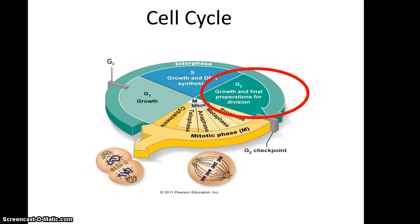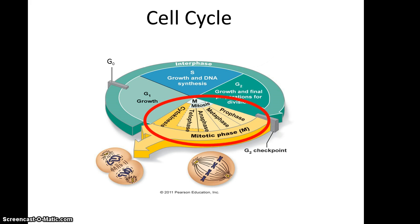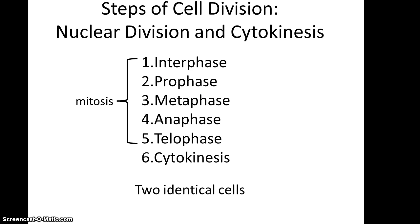At the end of G2 there's a checkpoint to make sure the cell is ready to divide. Then you enter the mitotic phase, which is when DNA is separated and you get two new cells. This has its own series of steps: nuclear division, which is called mitosis, and cytokinesis, which is the actual division of cytoplasm between the two new cells.